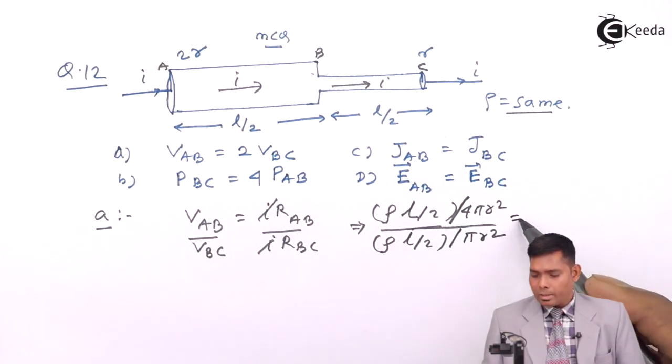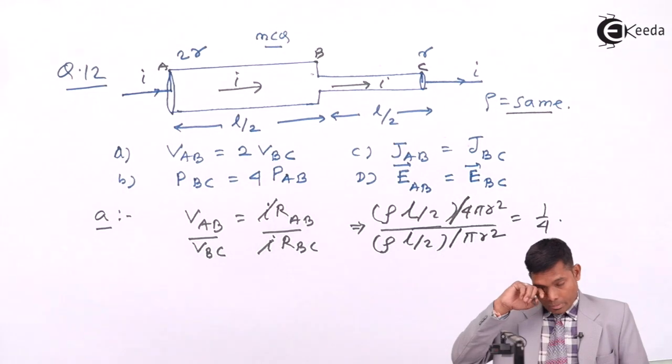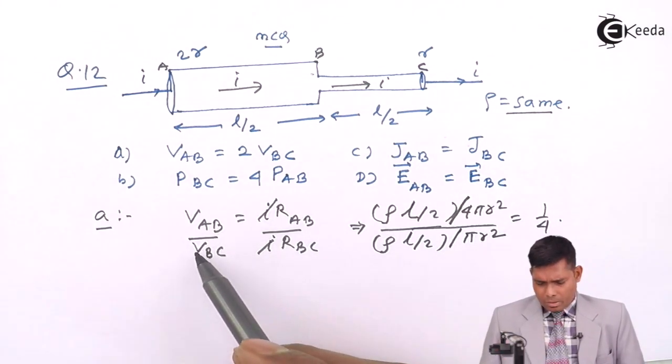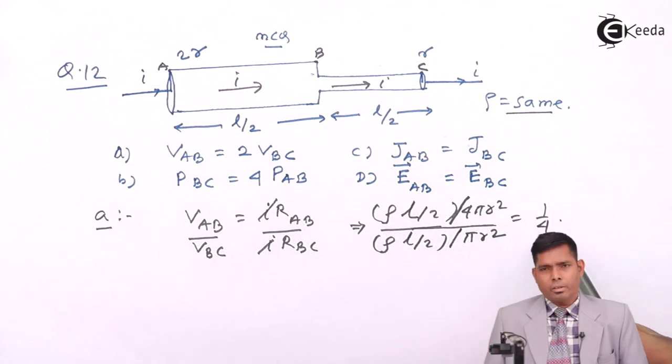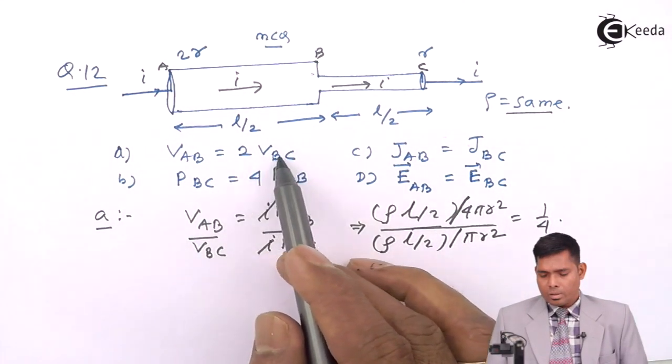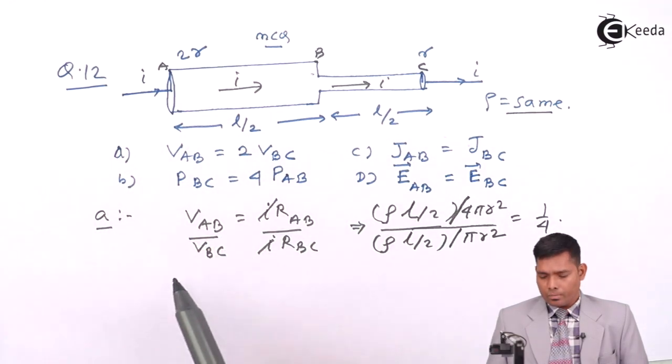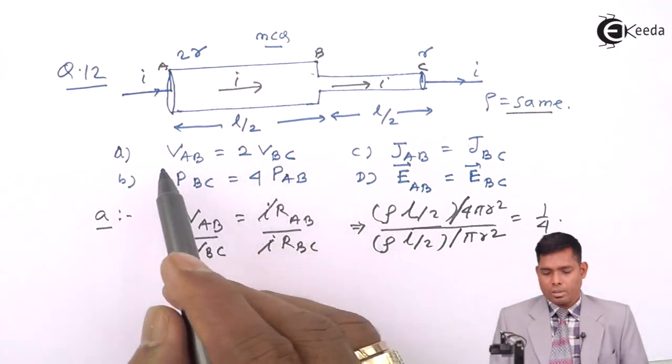So this cancels out everything and it is 1/4. That means VAB is VBC divided by 4. That means VBC is 4 times this. Thus this option is wrong.